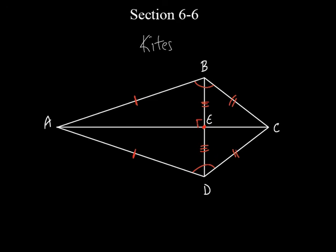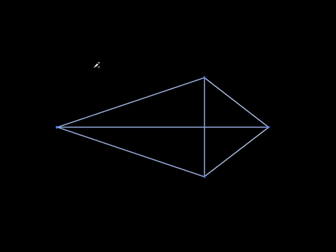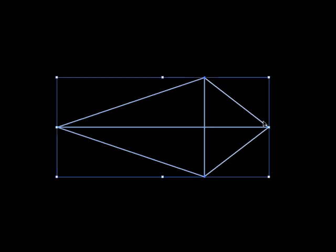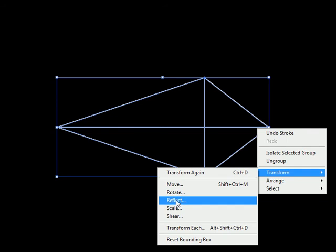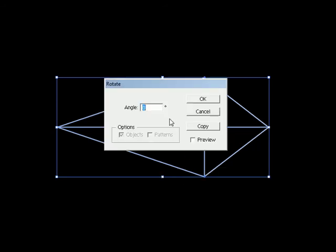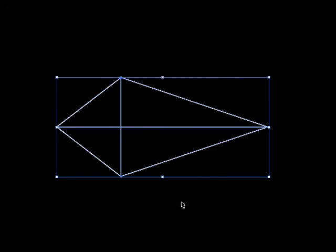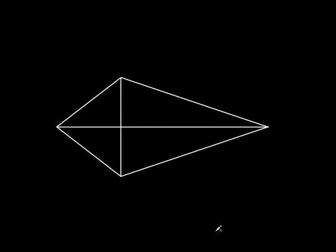All right, let's do a little example and we'll be finished with kites. That wasn't so hard, was it? Let's rotate the figure so it looks like the example in the book. This is really simple.